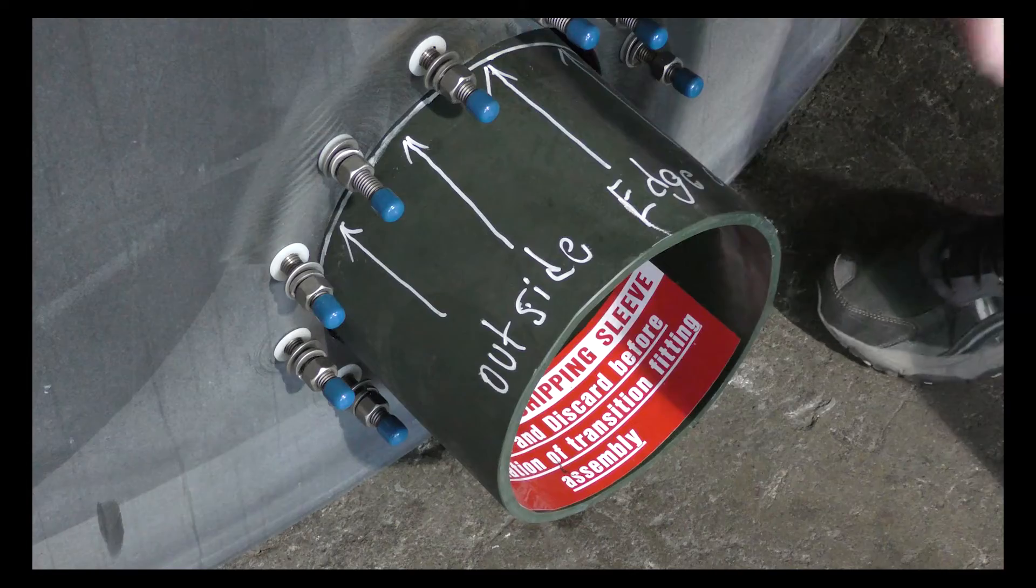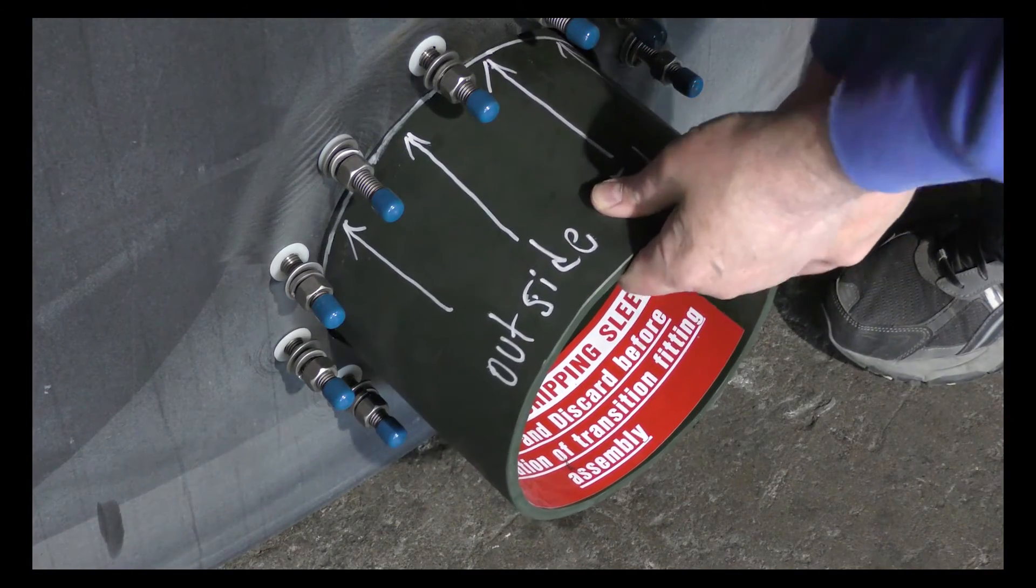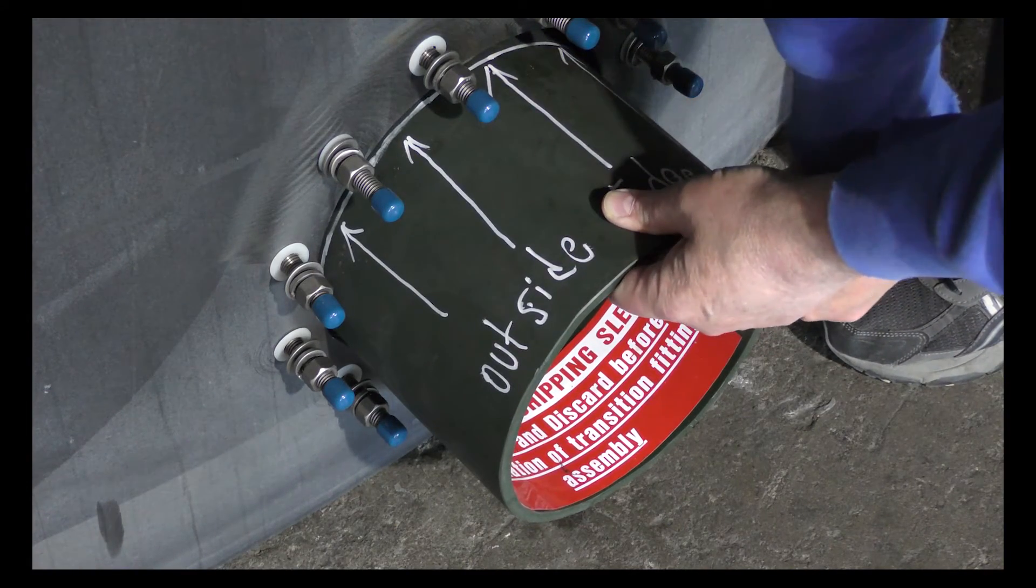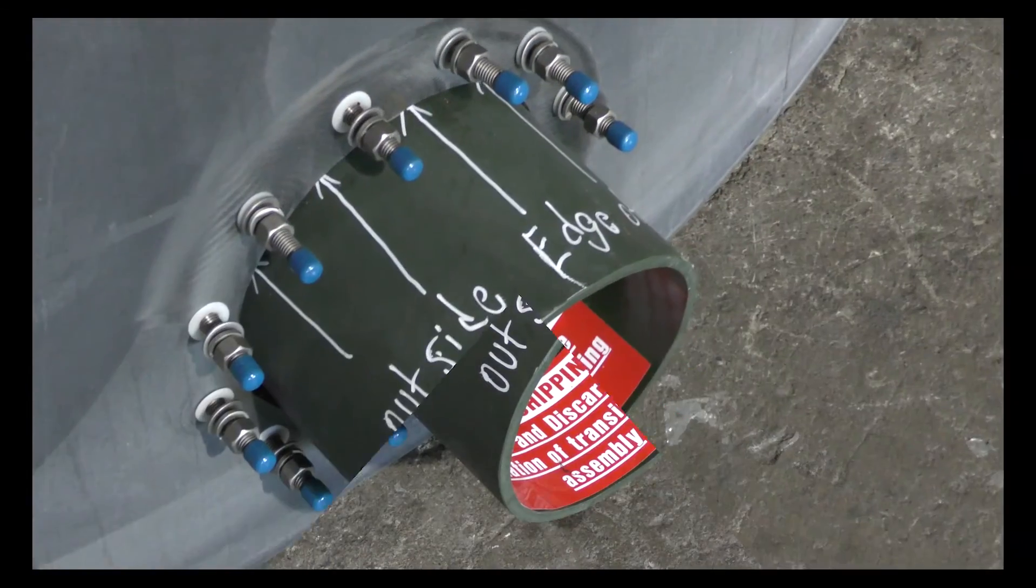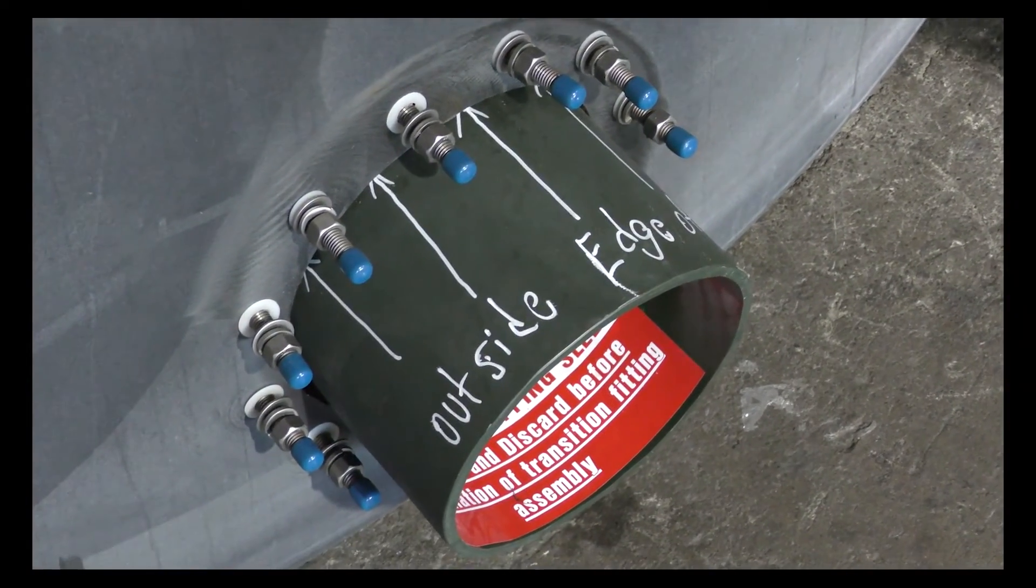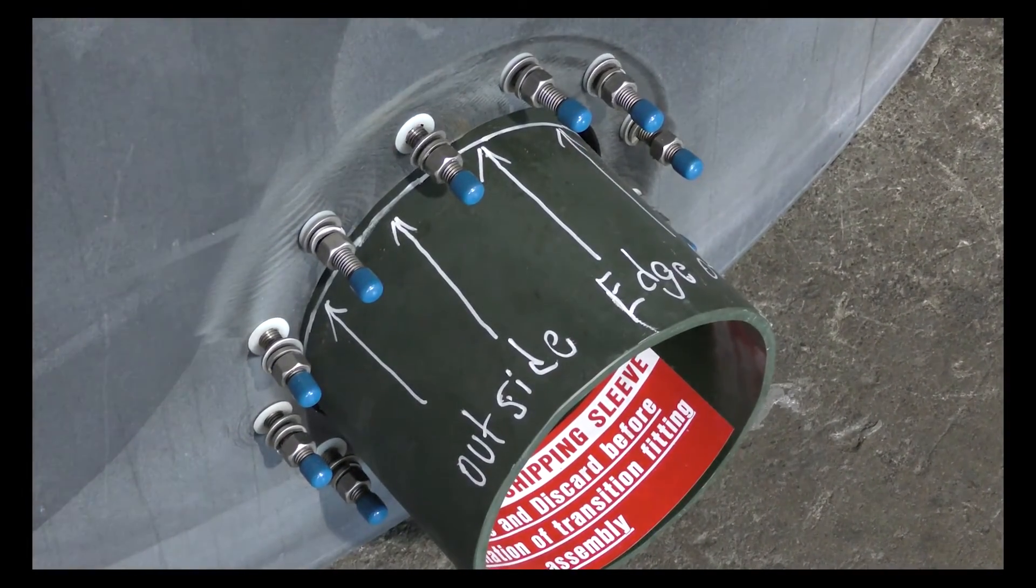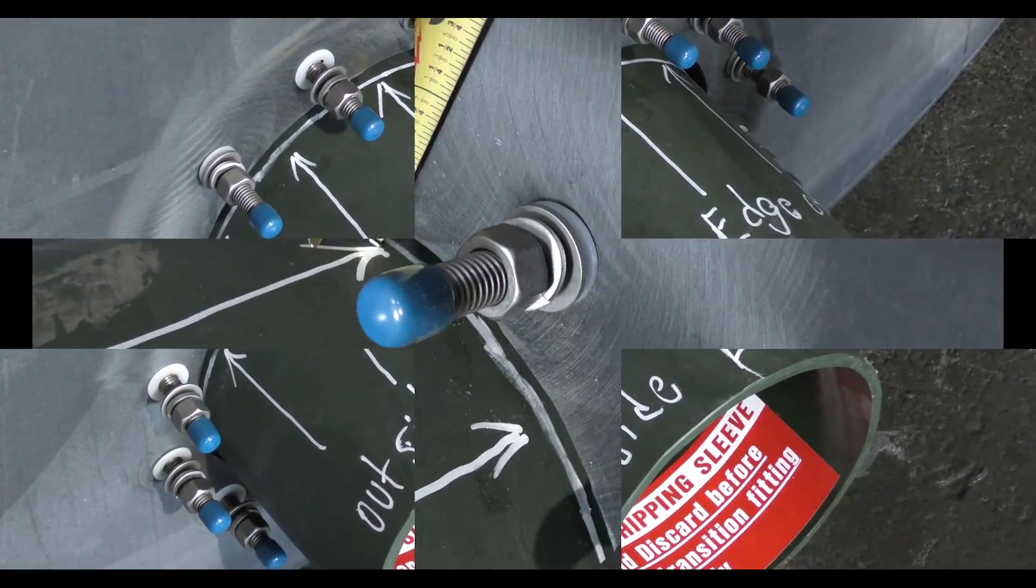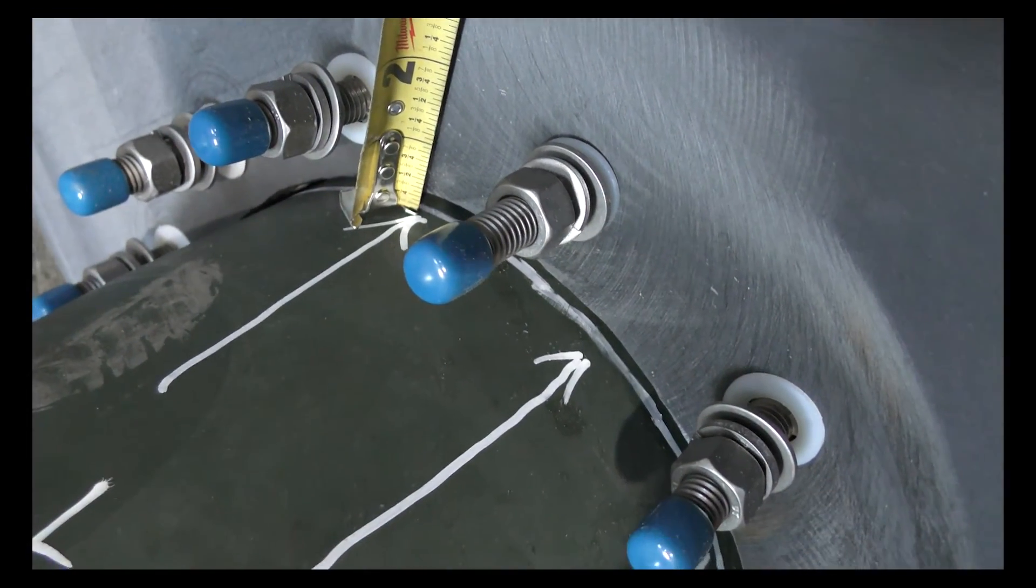Adjust the alignment sleeve so it is centered and the gap is equidistant around the sleeve. Once again ensure the line on the alignment sleeve lines up with the outside edge of the tank. Measure again to ensure the line of the alignment sleeve lines up with the outside edge of the tank and the alignment sleeve is centered.